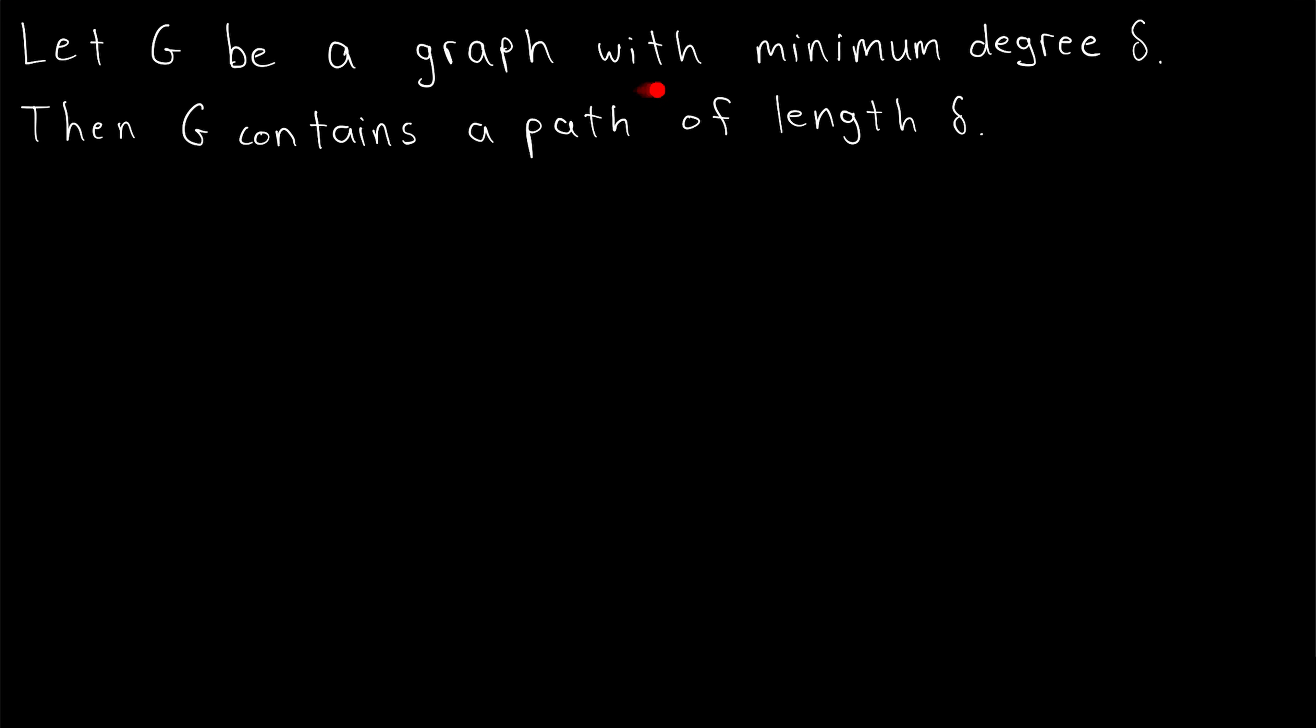Let G be a graph with minimum degree delta. Then G contains a path of length delta.